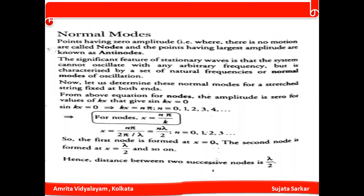In normal modes, points having zero amplitude are called nodes, and points having the largest amplitude are called antinodes. A significant feature of stationary waves is that the system cannot oscillate with any arbitrary frequency — it is characterized by a set of natural frequencies or normal modes of oscillation. These normal modes are determined for a stretched string fixed at both ends.